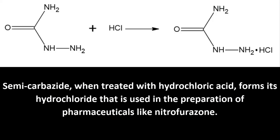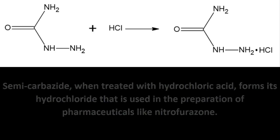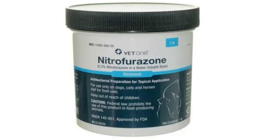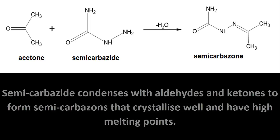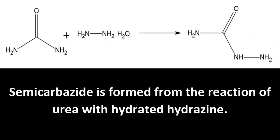Semicarbazide when treated with hydrochloric acid forms its hydrochloride that is used in the preparation of pharmaceuticals like nitrofurazone. Semicarbazide condenses with aldehydes and ketones to form semicarbazones that crystallize well and have high melting points.